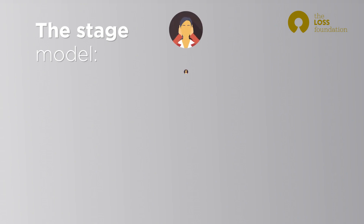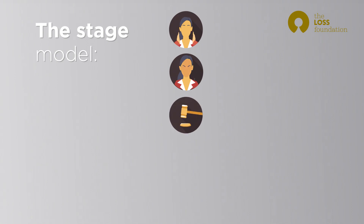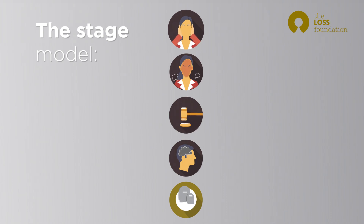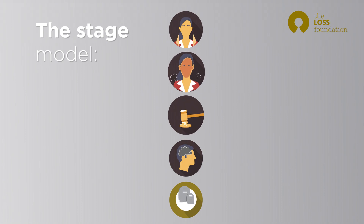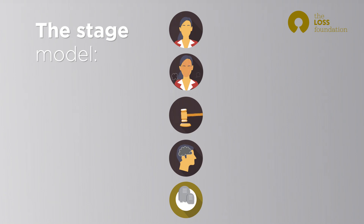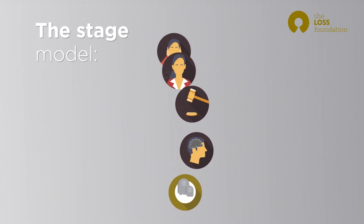You may be familiar with a stage model that says we move through five stages of denial, anger, bargaining, depression, and finally acceptance. This is a popular model in the media because it is comforting for people to think there is something you can move through in an ordered way, which helps contain the chaos of grief. However, it suggests that there is one right way to grieve and it also implies that there is a linear nature to bereavement.